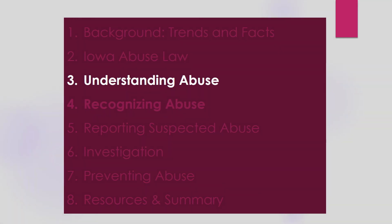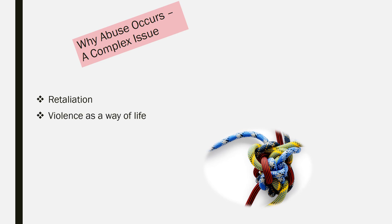Understanding Abuse. Why abuse occurs is a complex issue, and it's one to which there are usually no concrete answers. The literature offers some theories that help increase our understanding of the causes leading to abuse. Those dominant theories include retaliation — abuse suffered as a child and unresolved issues surrounding that abuse may result in retaliation. This is particularly true if the elderly parent continues to bait the adult child.